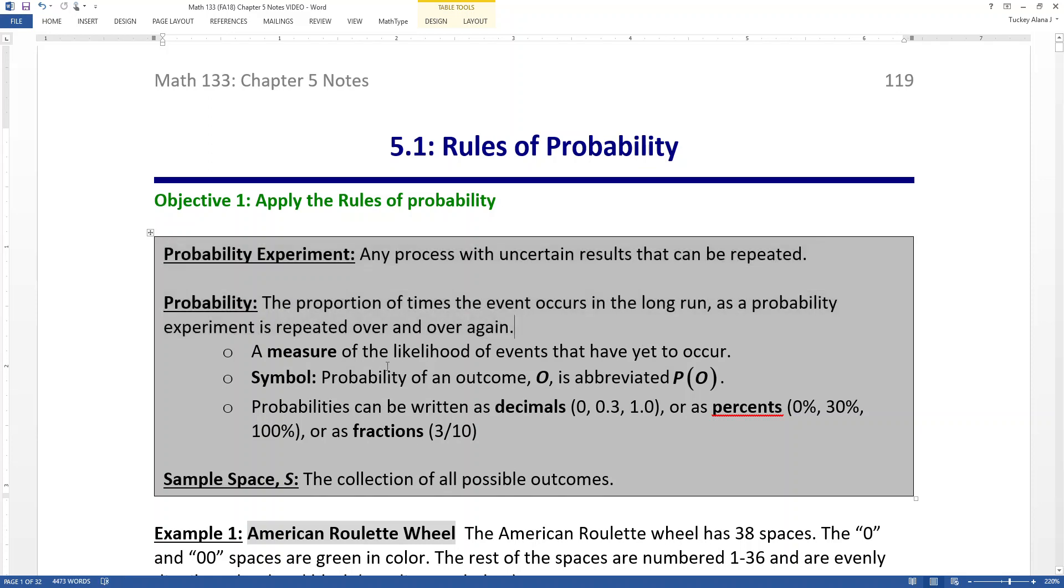So probability measures the likelihood of events that have yet to occur, things that haven't happened yet. So things with the future, things that are uncertain. And the symbol for it is P parentheses something. So if it's an outcome, O, you call it P parentheses O. And if that's looking familiar to you, if you've ever been in an algebra class, you might have seen this notation. It's function notation. It's saying F is your function name and X is your input. It's very much the same for probability. Probability will be a function for us. Every outcome will have its own associated probability and can only have one probability. That makes it a function. So the parentheses there is not acting as multiplication. The parentheses there is acting as the name for this thing. So it's the probability of O. Of is the parentheses.